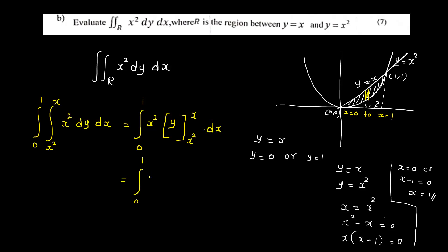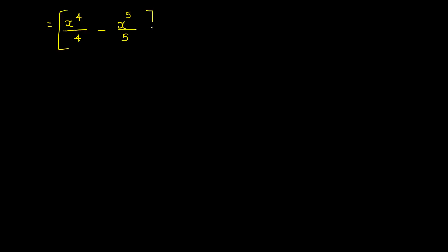That is equal to the integral from 0 to 1 of x² times (x - x²) dx. Multiplying out: integral from 0 to 1 of (x³ - x⁴) dx. Integrating gives x⁴/4 - x⁵/5, evaluated from 0 to 1, which equals 1/4 - 1/5 = (5 - 4)/20 = 1/20.